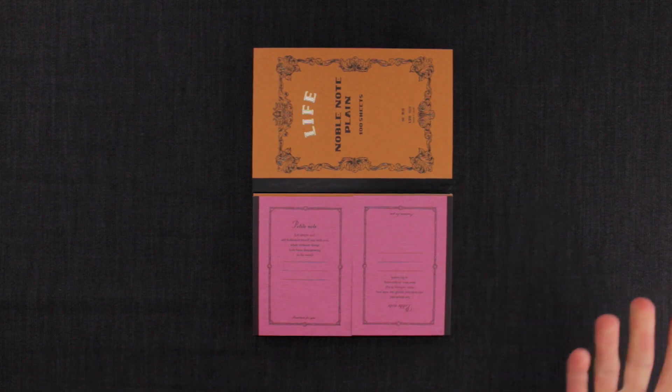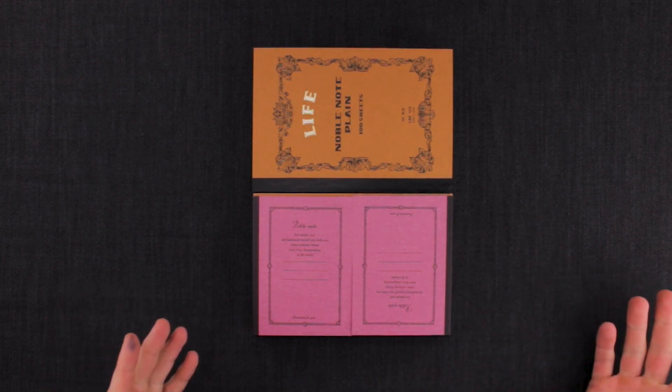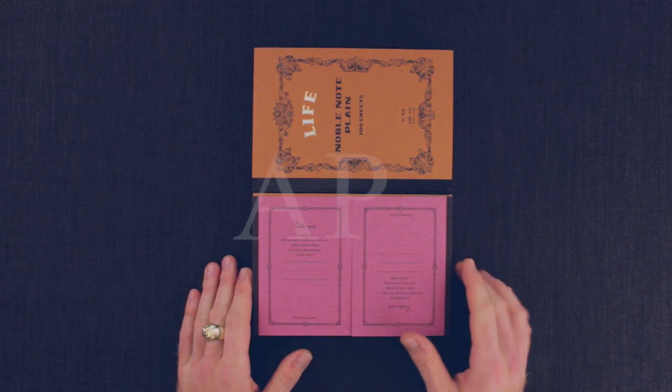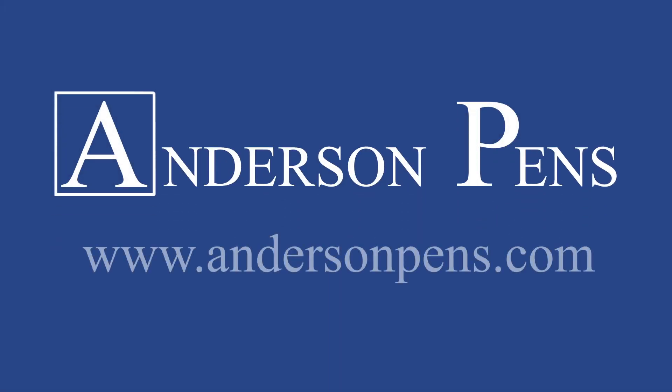There are other variants on this. There is a C series of paper sizes and then Japan actually does a whole separate thing, but we don't have time to get into that. So there you have it. Paper sizing 101. If you want to check out all the different sized papers, you can head on over to AndersonPens.com.